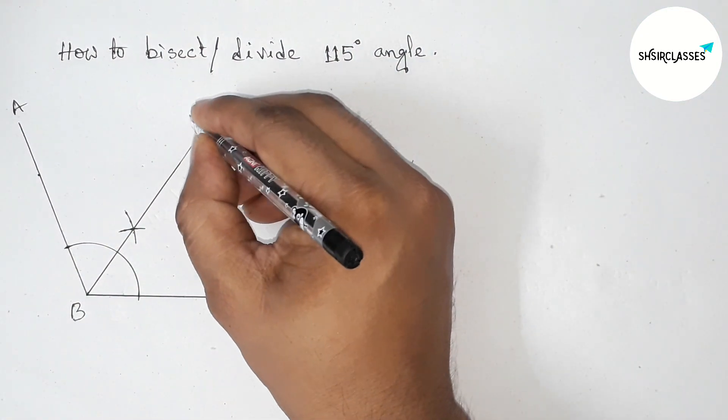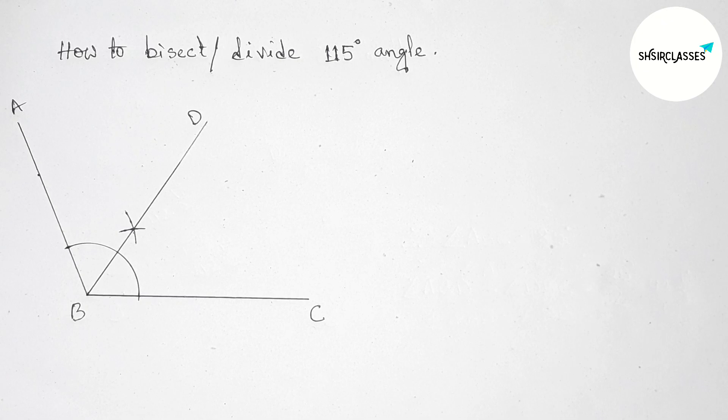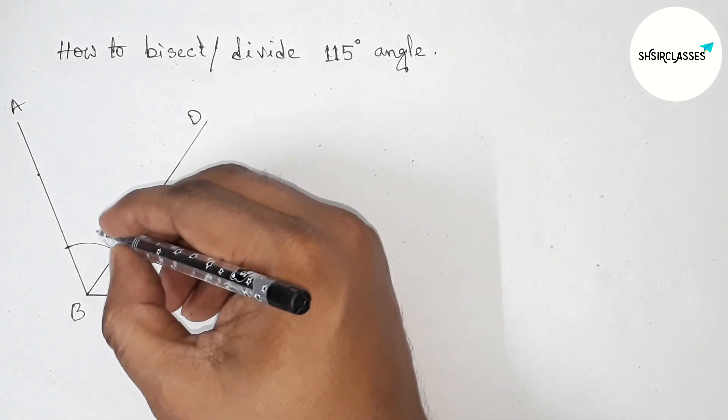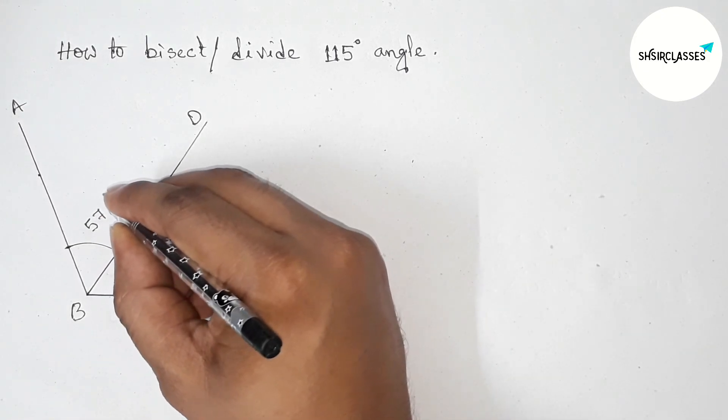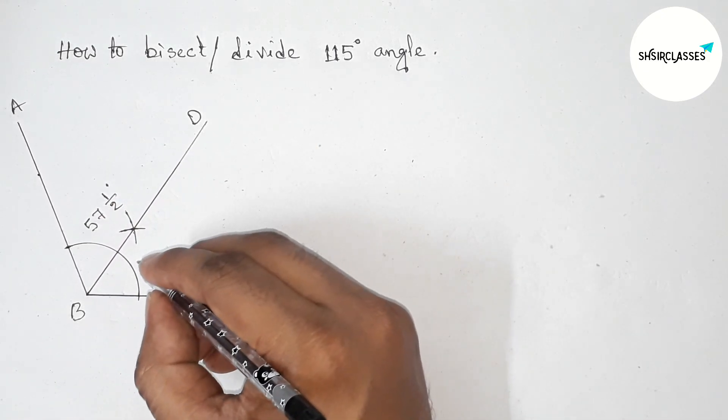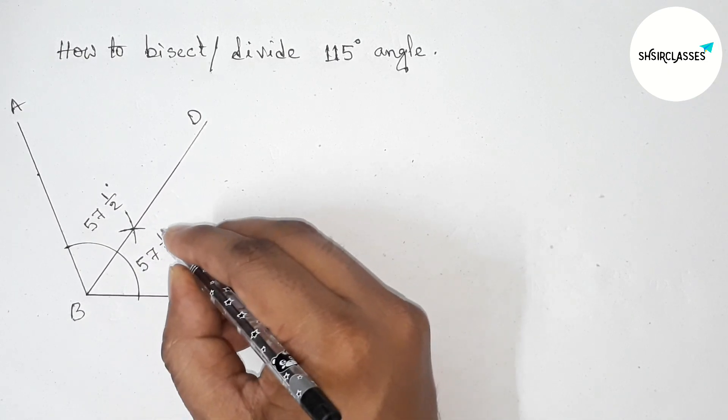Now taking point here D. So now angle ABD that is will be 57.5 degrees. So we have to write here in mixed fraction, 57 and 1 by 2 degrees. And this is also 57 and 1 by 2 degrees.